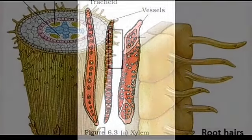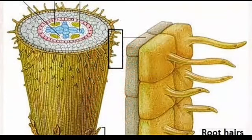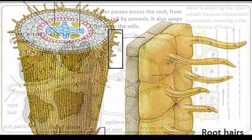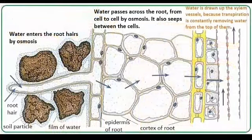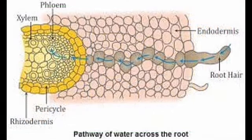The transportation of water and minerals begins with the absorption by the root. A root has fine root hairs. The cells of the root in contact with the soil take up ions by active transport. This creates a difference in water concentration between the soil and the root, so water moves into the root from the soil to eliminate the difference. This water enters the root xylem and moves upwards by ascent of sap.